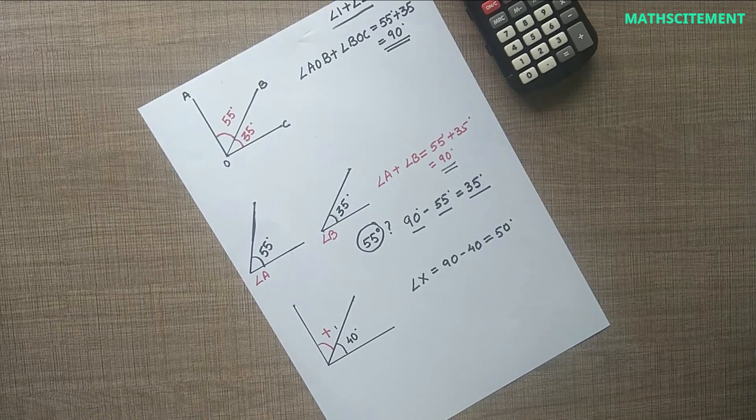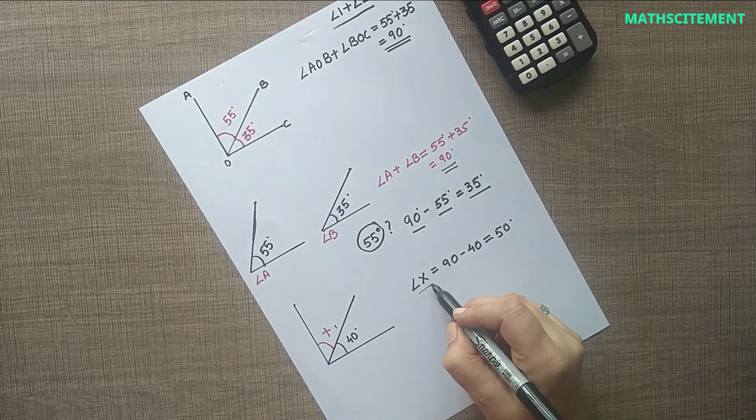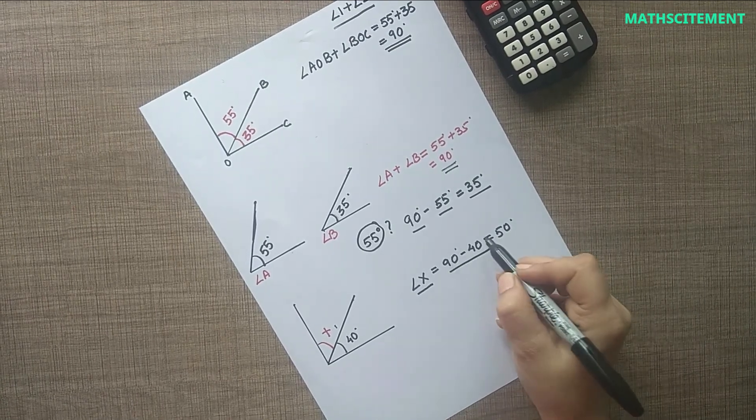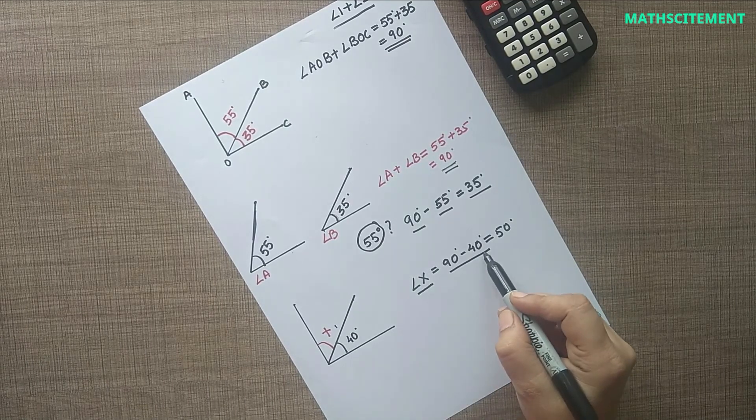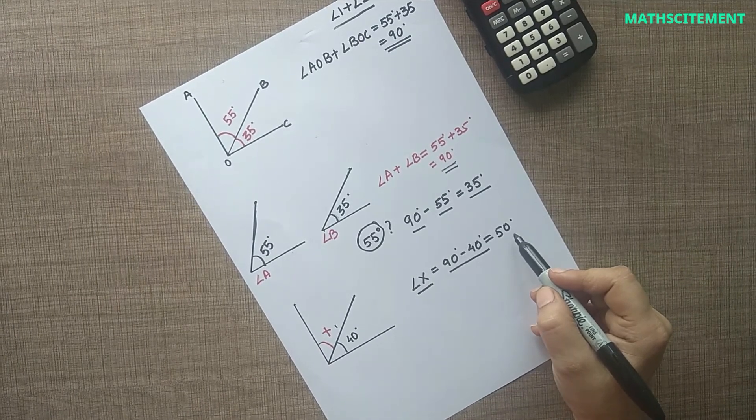The value of angle X will be 90 degrees minus the value of the given angle, i.e., 90 minus 40 equals 50 degrees.